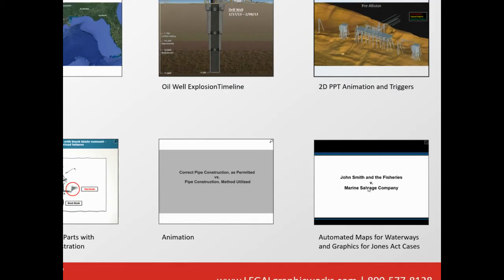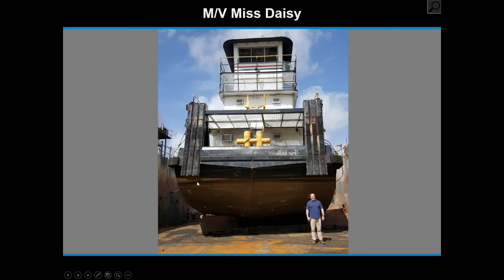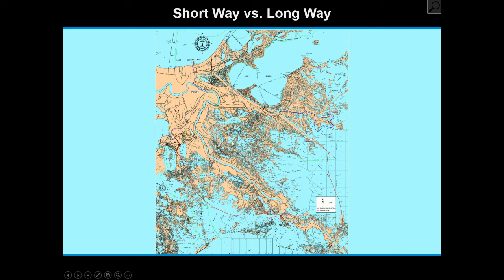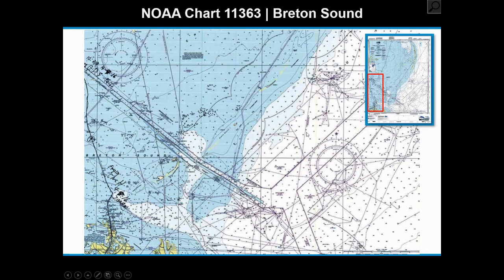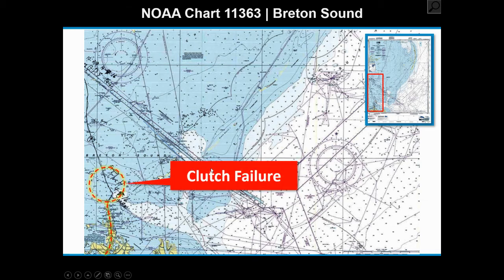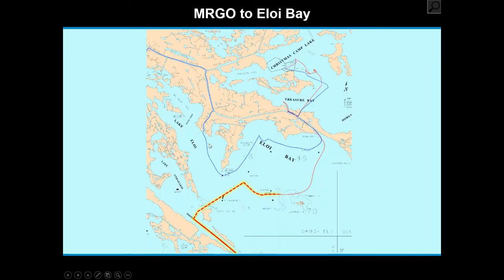The next and last set I want to show are a few different maps. The first are some maps of waterways — these can be really difficult to show, as there are a lot of different bayous and passages. It's really hard for jurors, mediators, or arbitrators to see exactly what you're talking about. Adding color and animation really zooms in on the area being illustrated. You can have a map and then a zoomed-in version right beside it, and you can see where the different events occurred.